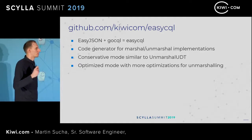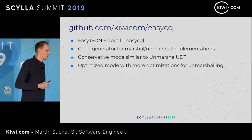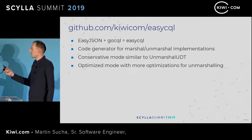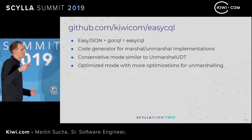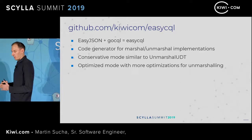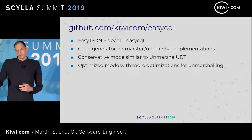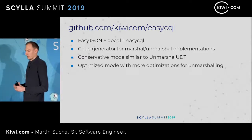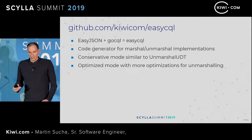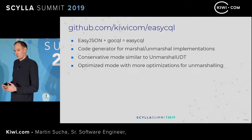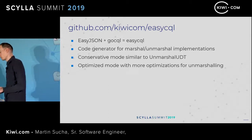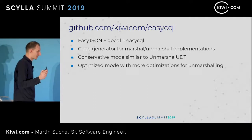EasySQL generates unmarshal and marshal SQL implementations for your types. It has two modes: a conservative mode that generates code similar to what I described — it generates unmarshal_SQL which is functionally equivalent with the same performance. It also has a more optimized mode that takes advantage of knowing the Go types and database types ahead of time to skip some checks in the generated code. The optimized mode is in alpha state, so use it at your own risk.